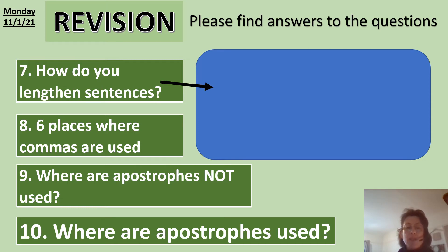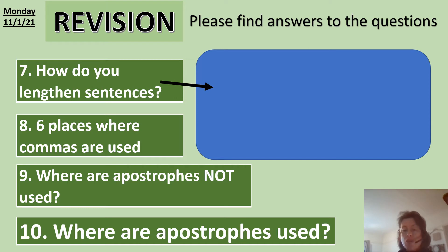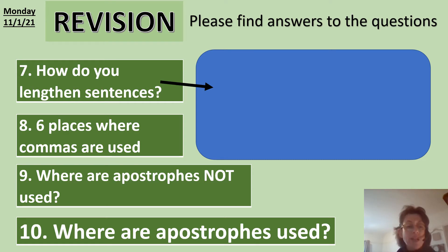The surrounding is brown in colour rather than green like this one. So the questions we're going to use to revise are: how do you lengthen sentences? Six places where commas are used. Where are apostrophes not used? — very important to remember that. And where are apostrophes used?